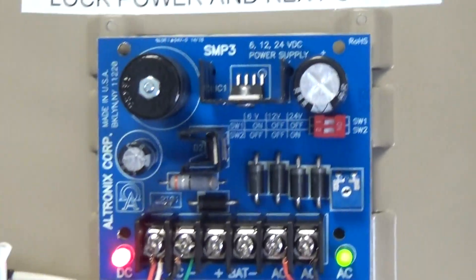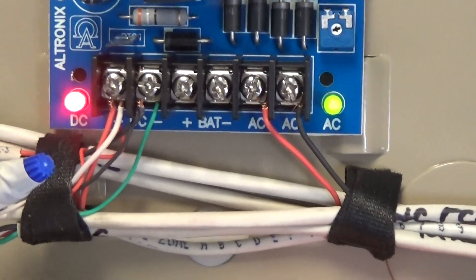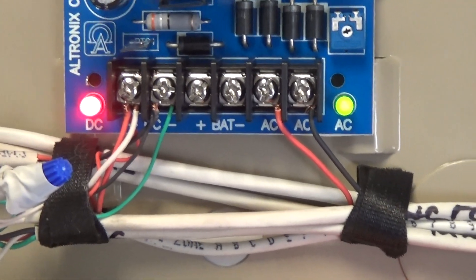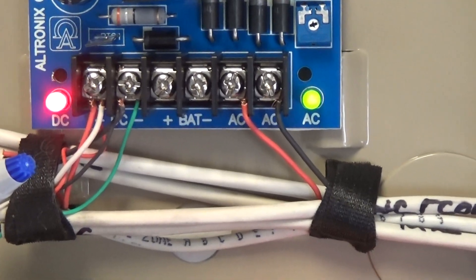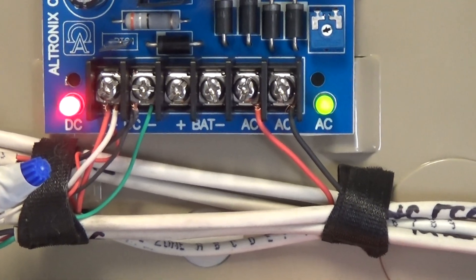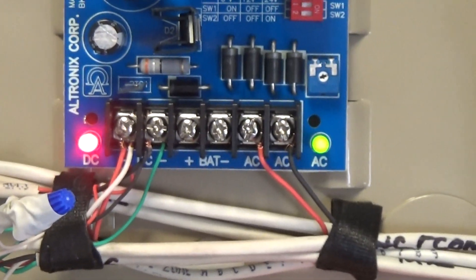This is a 2-door access system, and you have the SMP3 that powers up the maglocks and that powers up the timer on the push button rex button and also the passive infrared timer request to exit. We have a battery here, I haven't hooked that up, I'm getting ready to hook that up.